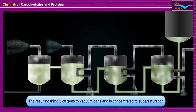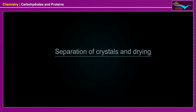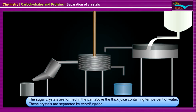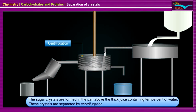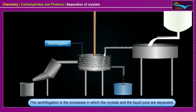The resulting thick juice goes to vacuum pans and is concentrated to supersaturation. The sugar crystals are formed in the pan above the thick juice containing 10% of water. These crystals are separated by centrifugation. Centrifugation is the process in which the crystals and the liquid juice are separated.